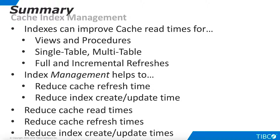Let's summarize what we have seen in this presentation. When indexes are created on cache targets, they can often improve read response times for cached data. Indexes can be created on both cached views and cached procedures, and can be used in both single table and multi-table caches, as well as in both full refresh and incremental refresh scenarios. There are three specific ways index management can make caches more efficient: an indexed cache can reduce read times for data consumers; dropping indexes prior to a cache refresh allows the refresh to run more quickly; and deleting stale cache data prior to index recreation allows the index to be recreated more quickly and efficiently.